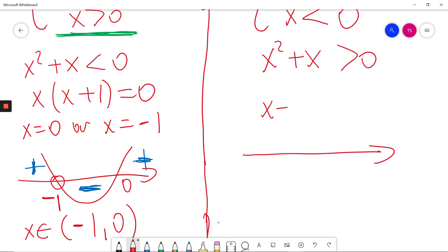So x will be 0, x will equal -1. This is the same thing. -1 and 0. I'll just write it again.